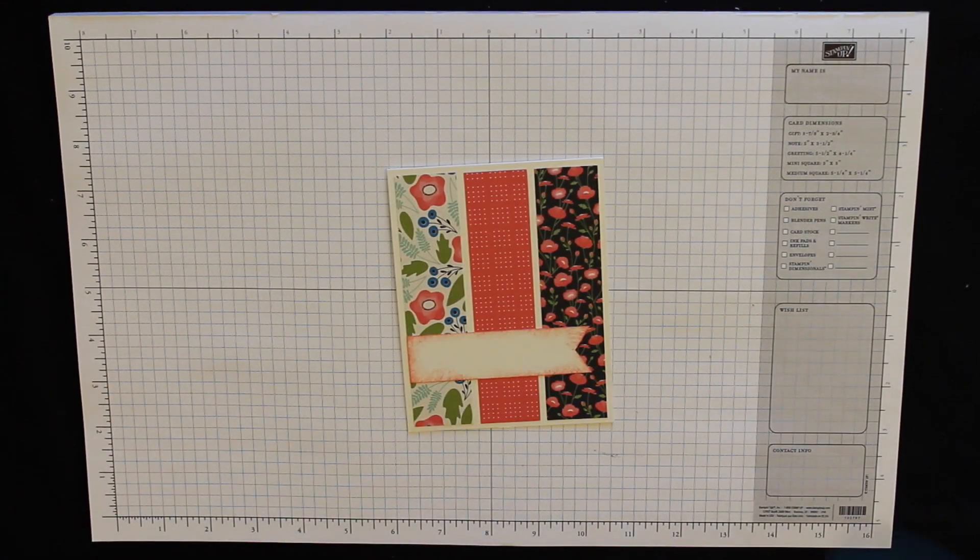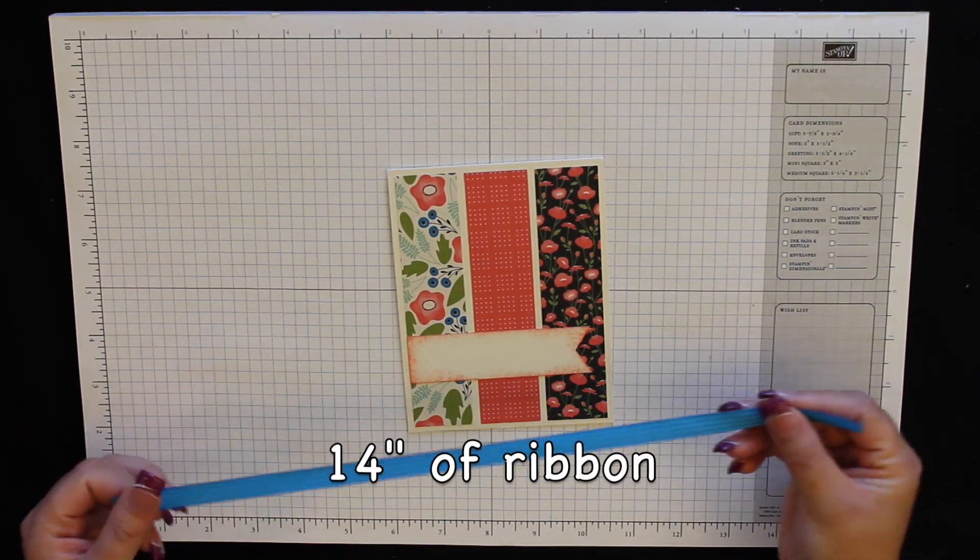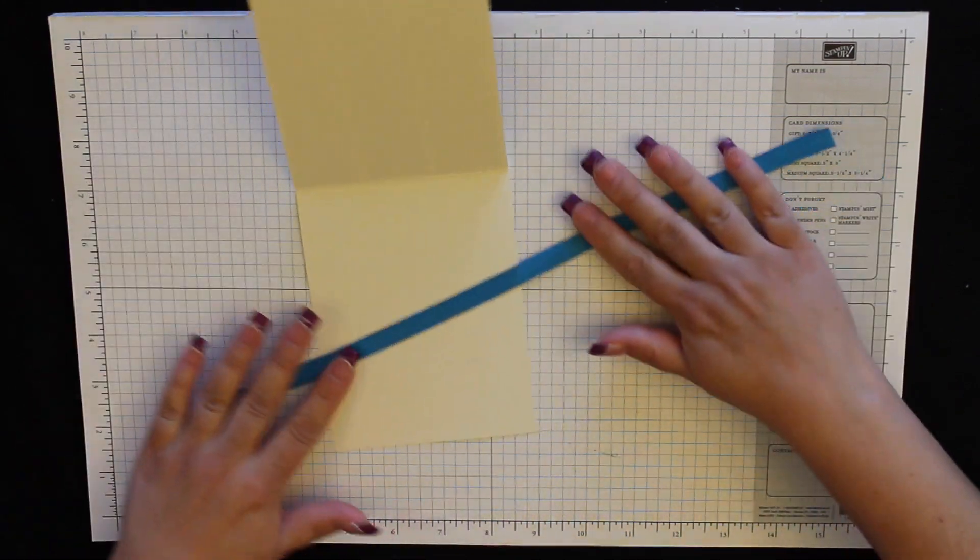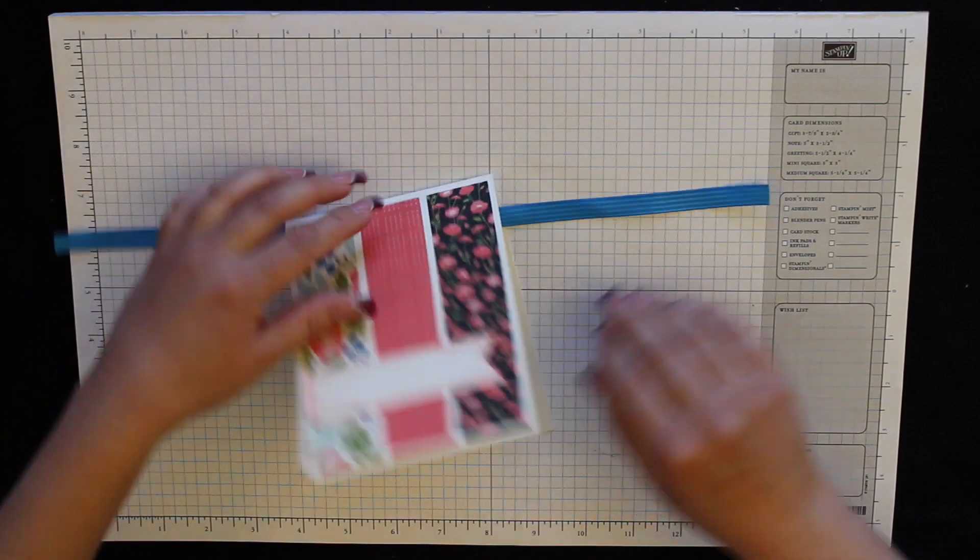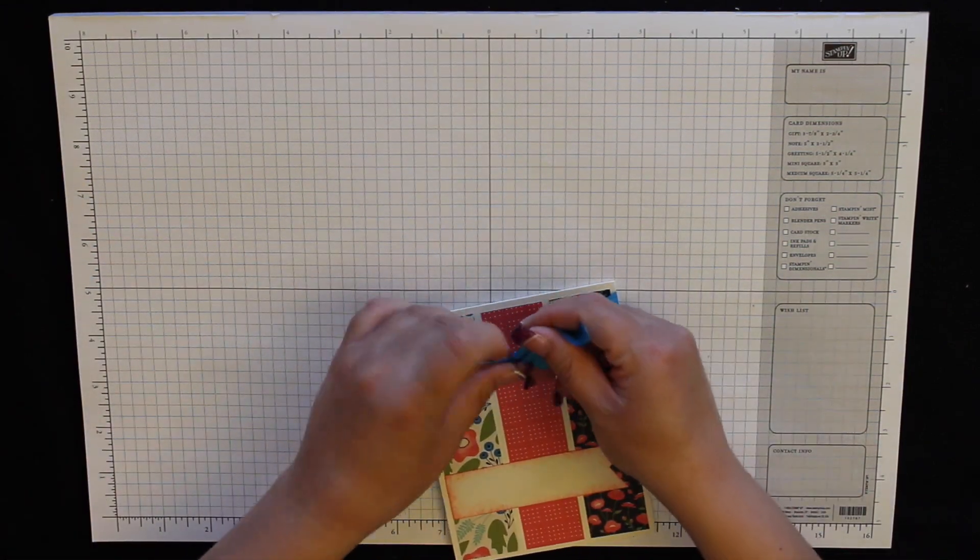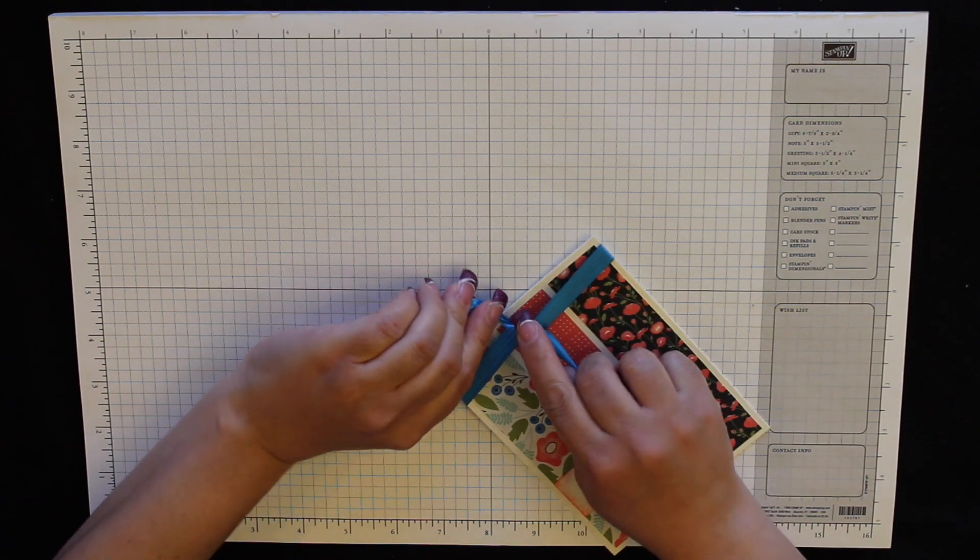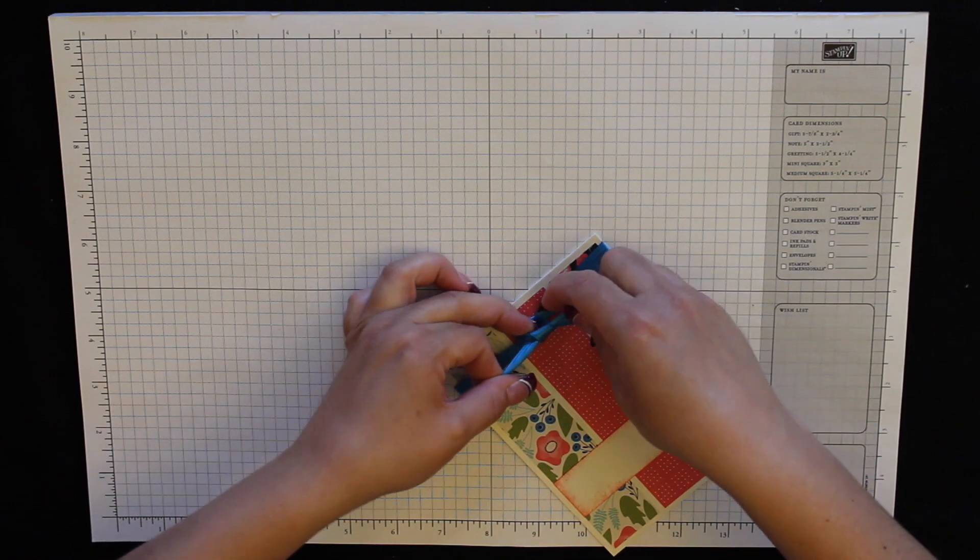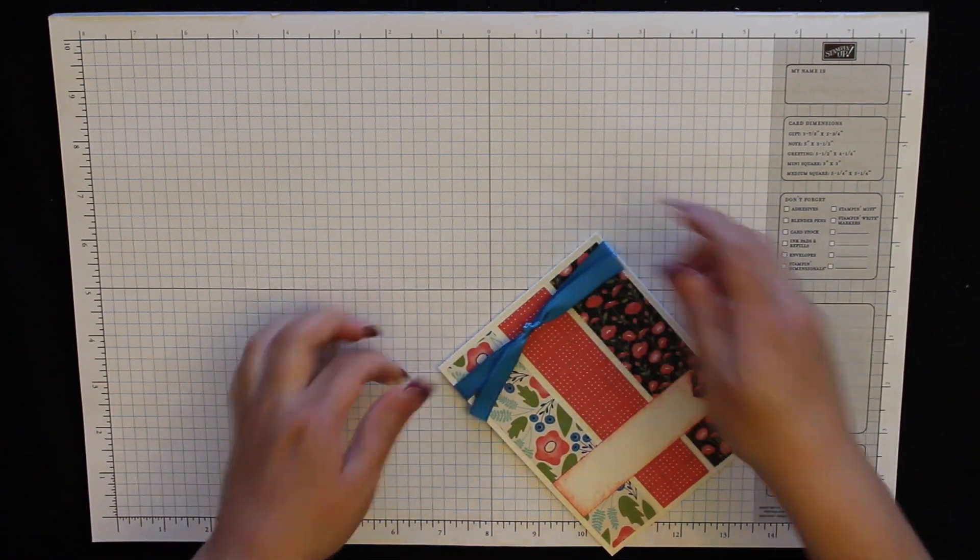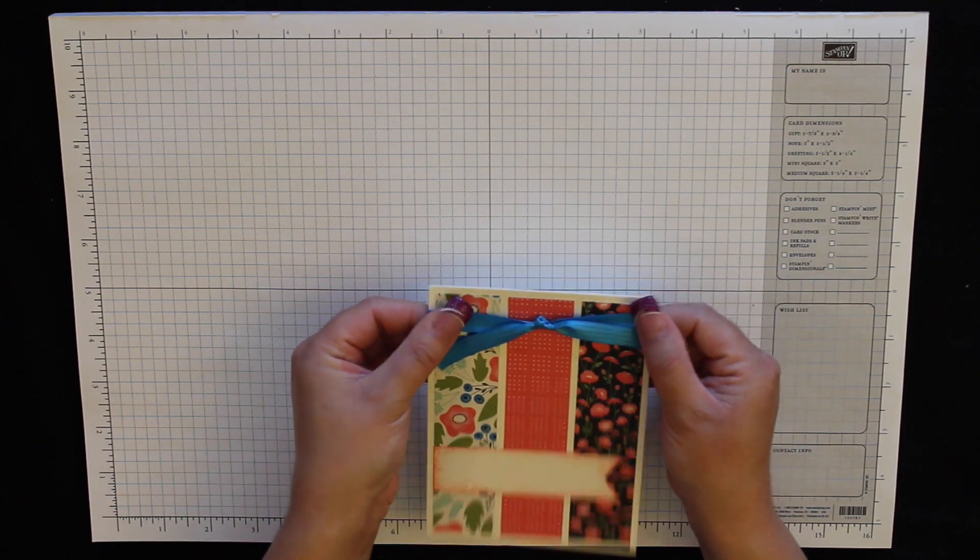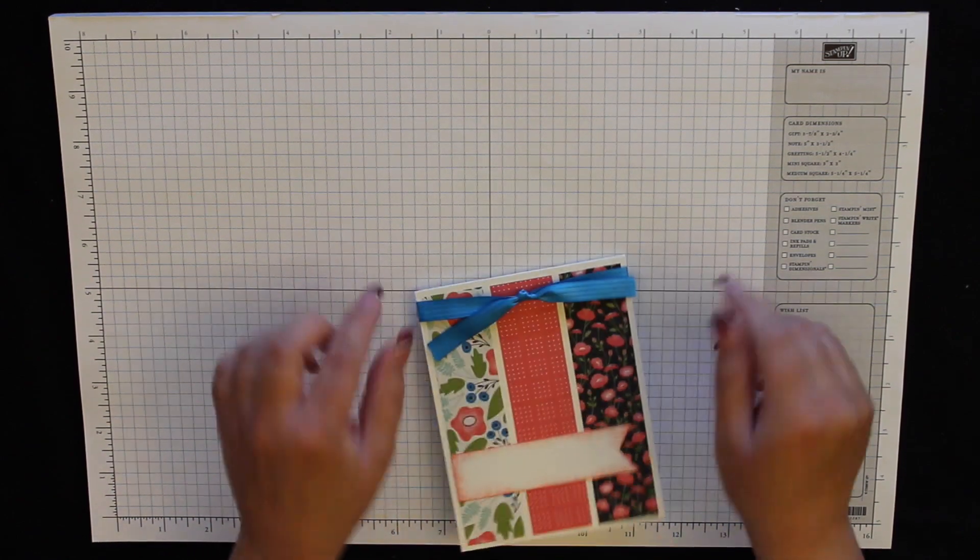Now here I have some of our Pacific Point Stitch Satin Ribbon. This is about 14 inches. I'm going to open up the card, make sure it's laying in there flat, and then I'm going to tie a knot at the top. Pull that and then the nice thing about it going around is now I can move it and center it exactly where I want it.